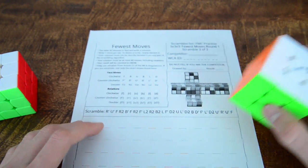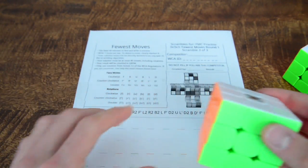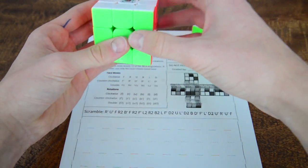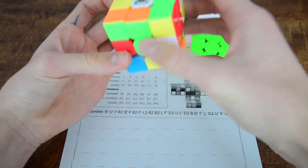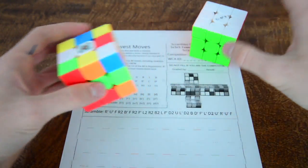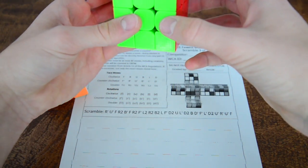So first thing you do when you get your sheet of paper, you get both of your cubes and scramble from the paper. Alright, so when you have one scrambled then go on to the other.